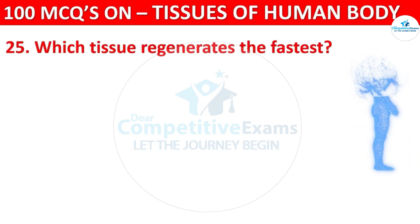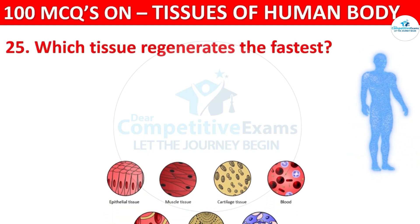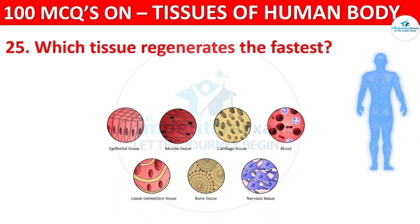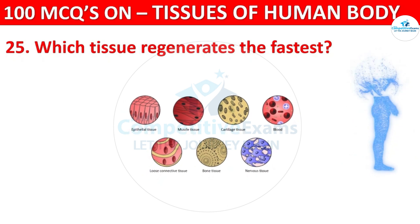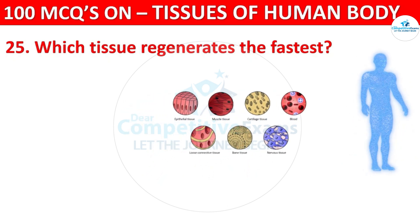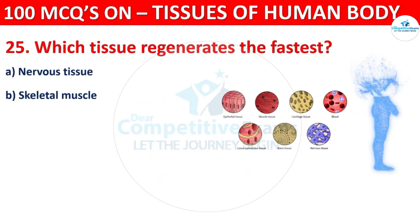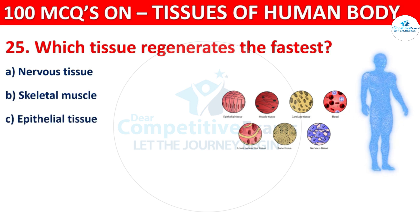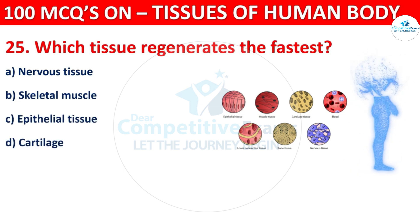Which tissue regenerates the fastest? Your options are Nervous Tissue, Skeletal Muscle, Epithelial Tissue, or Cartilage.